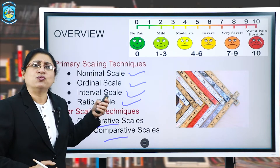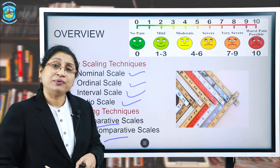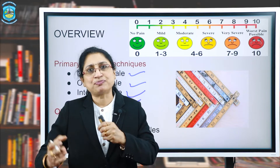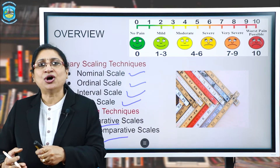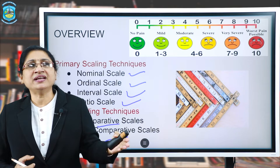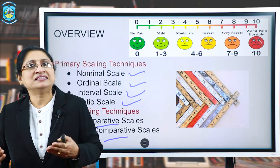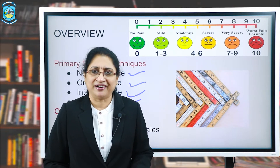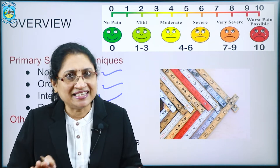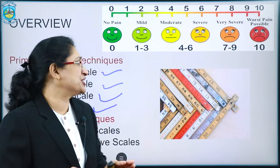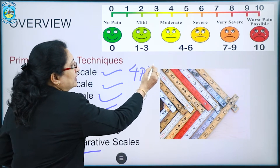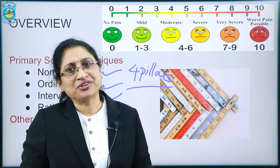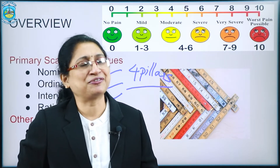Scaling technique is actually a method of placing the respondents in continuation of gradual change in a pre-assigned value — maybe symbols or numbers — based on the features of a particular object as whatever the defined rules are. All scaling techniques are based on four major pillars: the order, the description, the distance, and of course the origin.